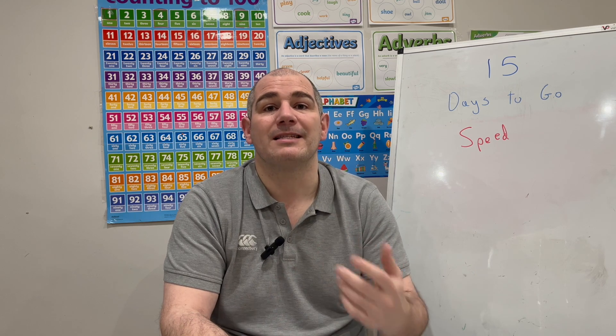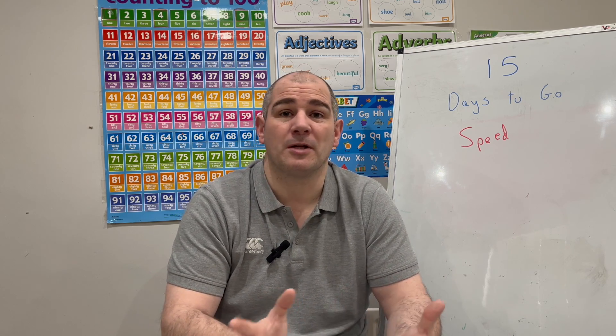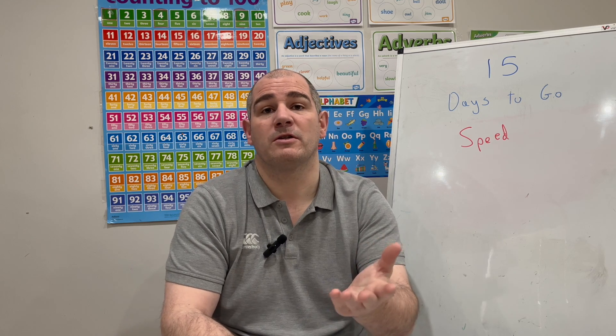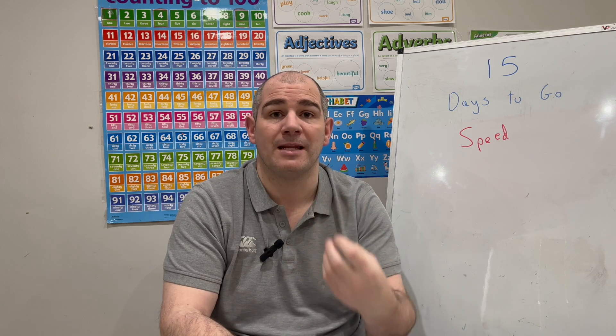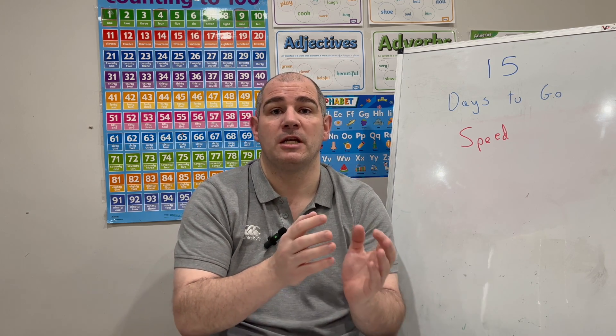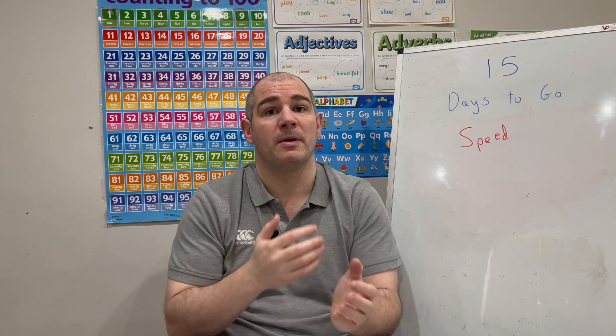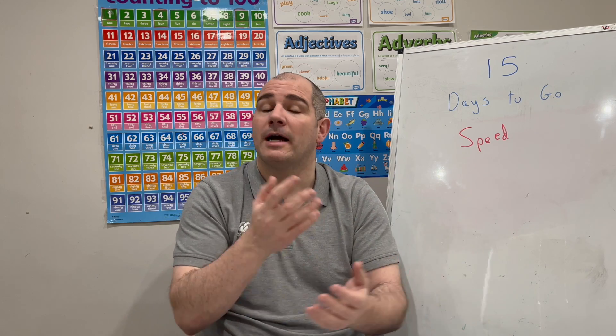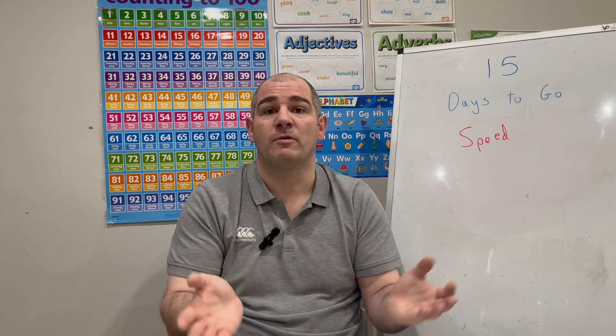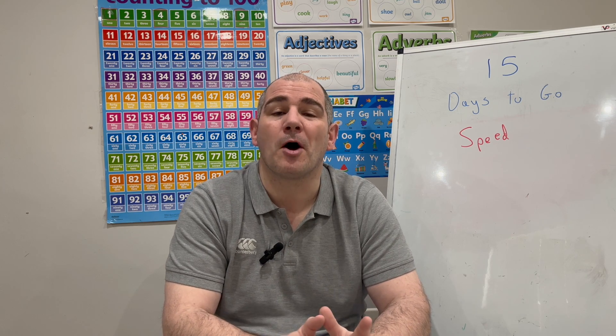So in this video we've looked at speed, distance and time. Speed equals distance divided by time, time equals distance divided by speed, and distance equals speed times time. We've also looked at questions involving those formulae, including how to convert minutes into hours — for example, three quarters of an hour is 0.75. Remember these concepts can appear in other topics too, such as standard form with speed, distance and time. It's 15 days to go to your GCSE maths exam — keep up the hard work, and I'll see you tomorrow for 14 days to go. Cheers, bye.